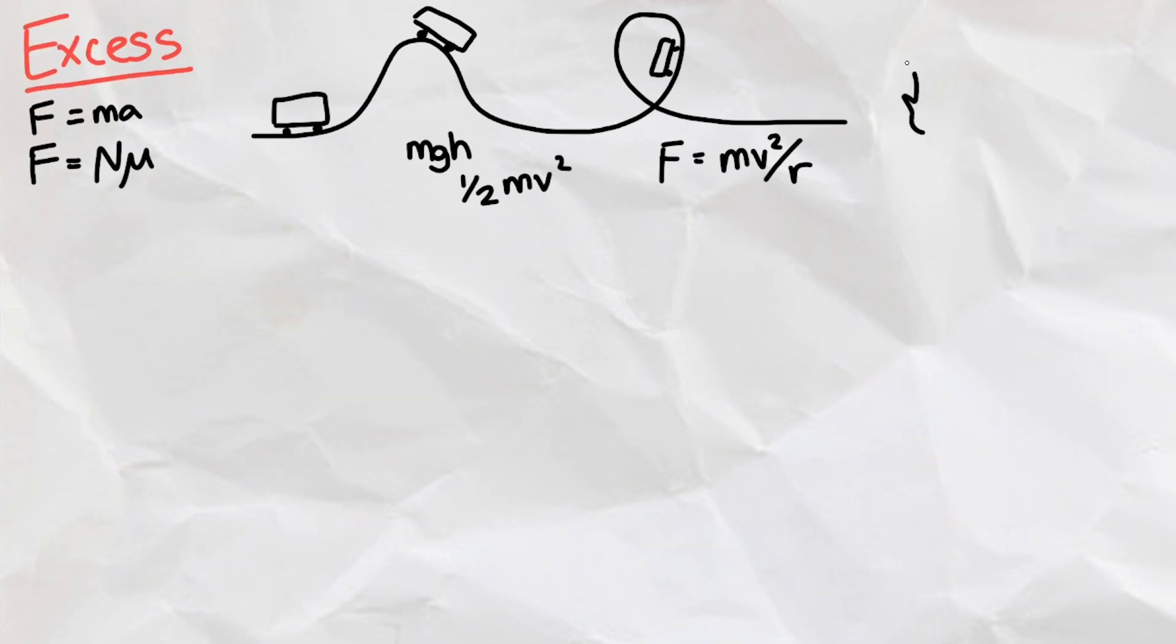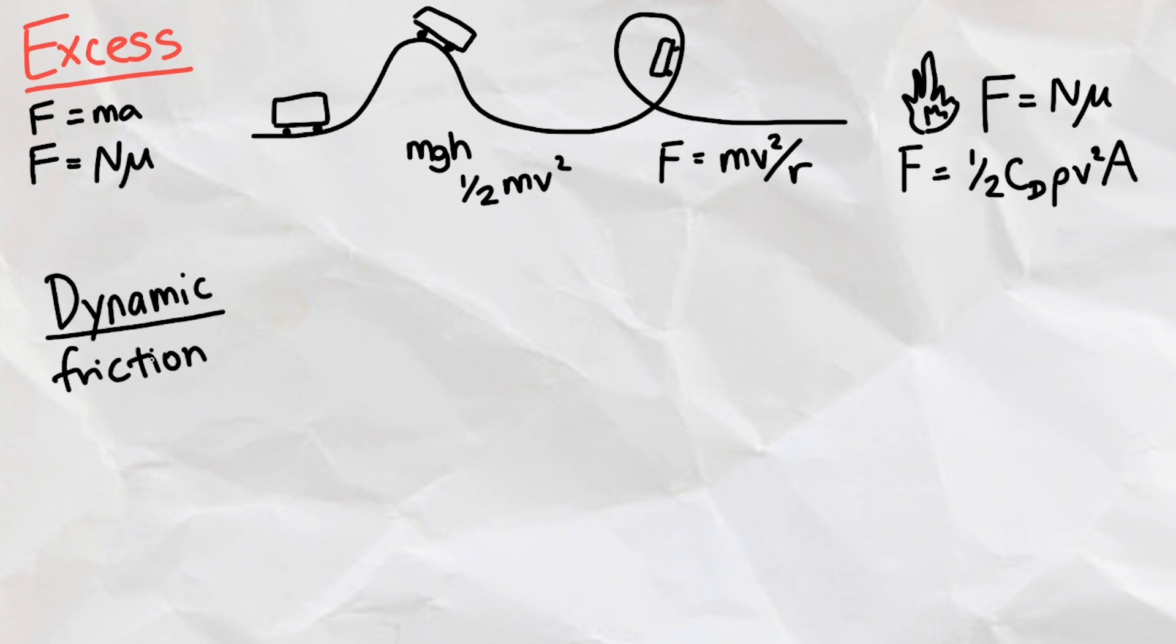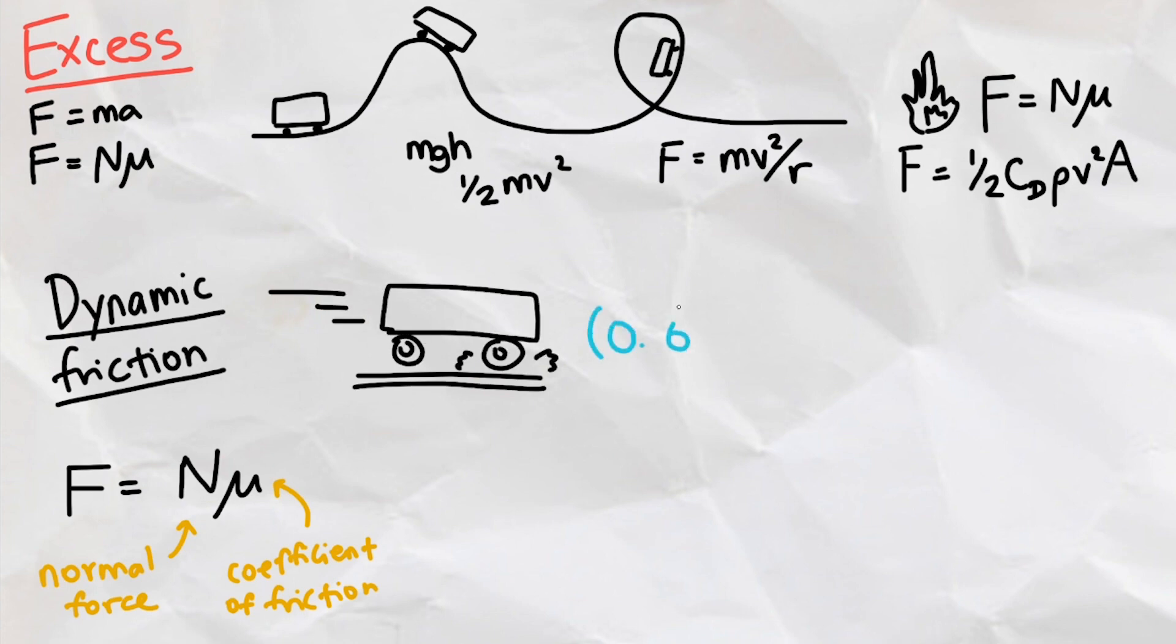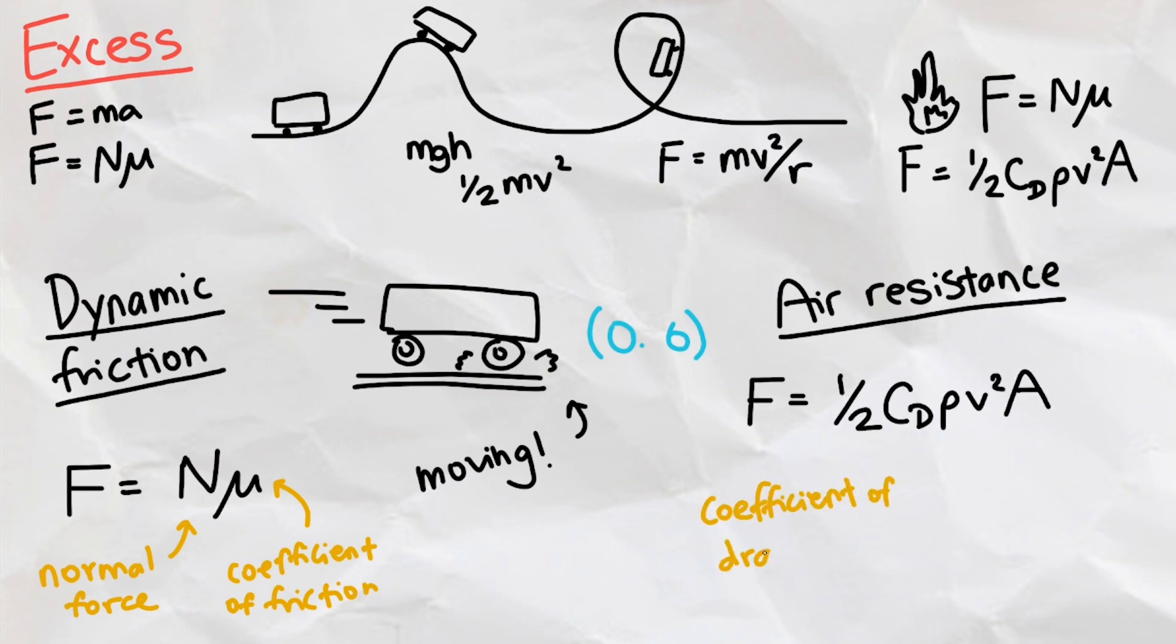Throughout the entire process, a lot of energy was lost due to air resistance and friction between the roller coaster and track. The friction between moving objects is called the dynamic friction, which uses the same formula as static friction, but it has a different coefficient of friction for the same materials involved, which is 0.6. And for the air resistance formula, we won't get to it as it is complicated, but perhaps in a future video.